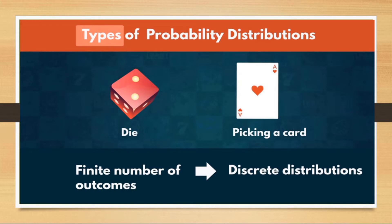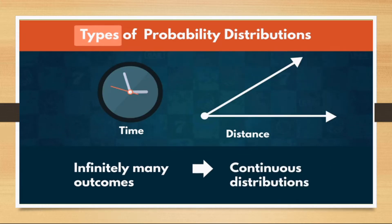That is, they can have one of a few possible values, like getting number 1, 2, 3, 4, 5 or 6 on a die — nothing else. Whereas some, like recording of time or distance, can have many outcomes. For example, distance covered can be 1.1, 1.12, 1.112 and so on. So they are called continuous distributions.